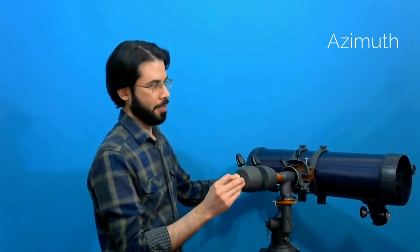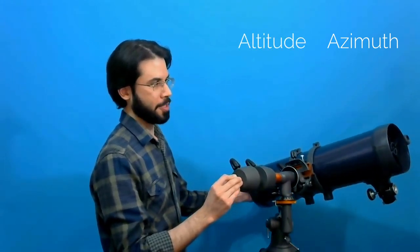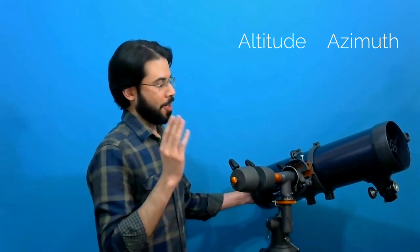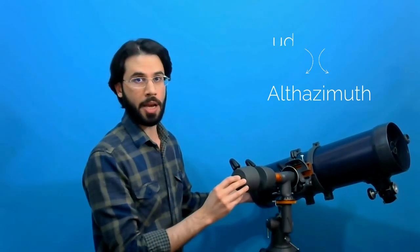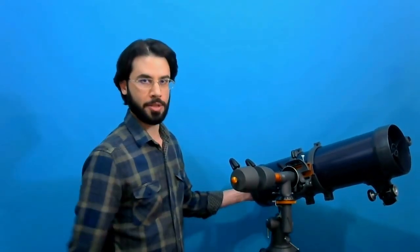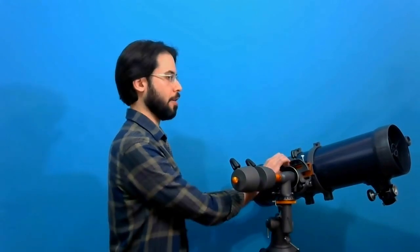And then I need to bring it up, and this is the altitude. Because of this, this kind of mount with these two axes is called alt-azimuth. And I can see that star very easily. I lock my telescope and watch that star.